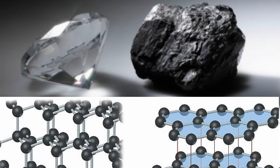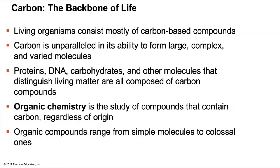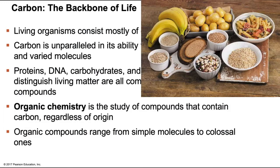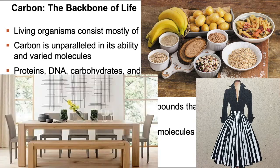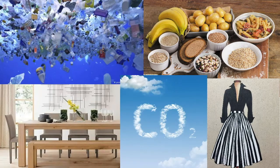Allotropes of carbon include graphite, one of the softest known substances, and my favorite, diamonds, which are the hardest naturally occurring substance that form under extreme temperature and pressure. Carbon is also the backbone of the diverse molecules of life. It is found everywhere from cereal and pasta to clothing, furniture, plastics, and the air we breathe. So how does one element find itself literally at the center of such vastly different molecules?